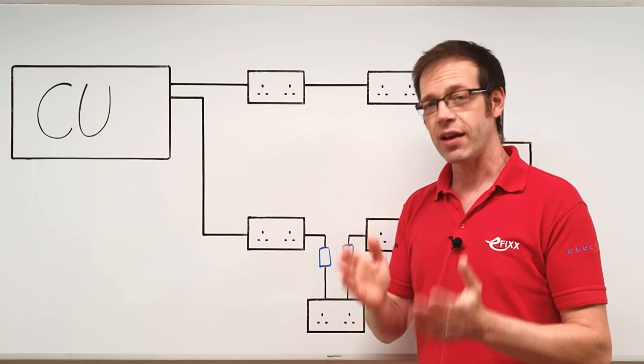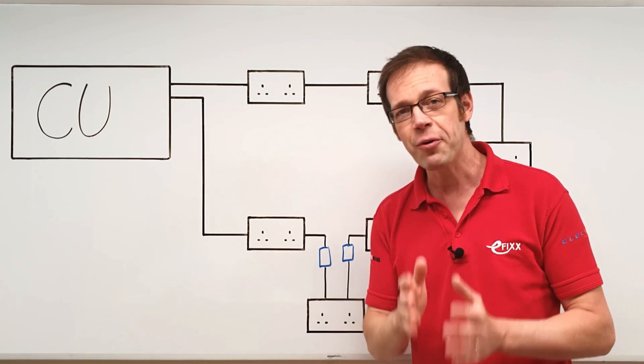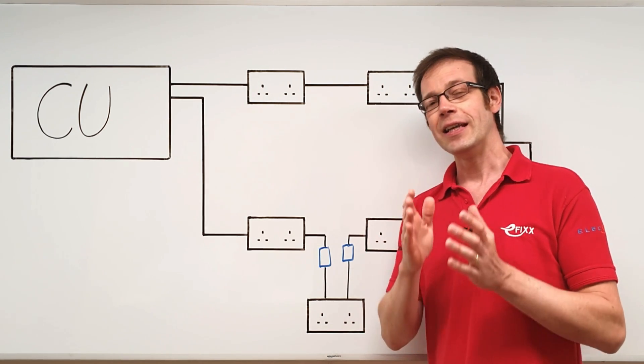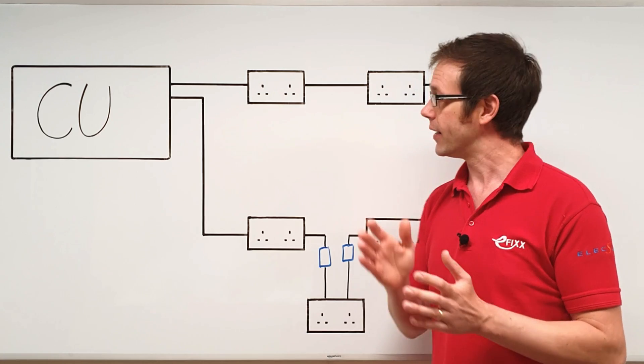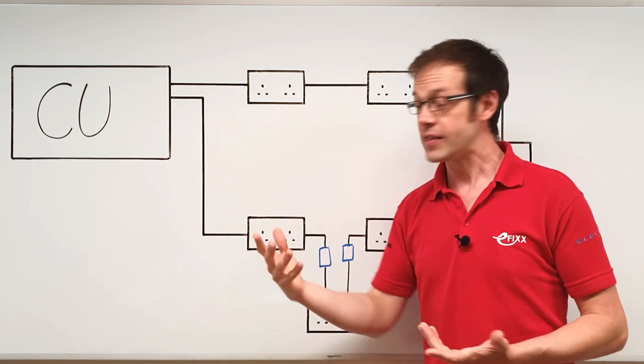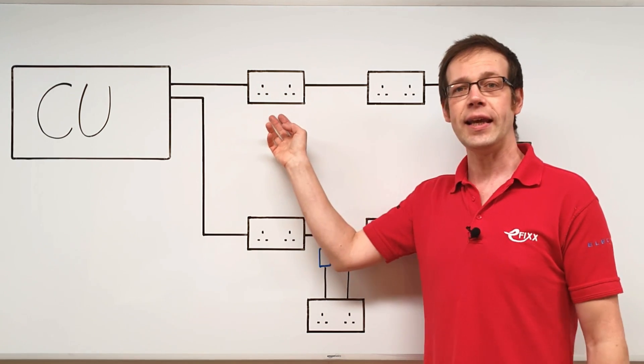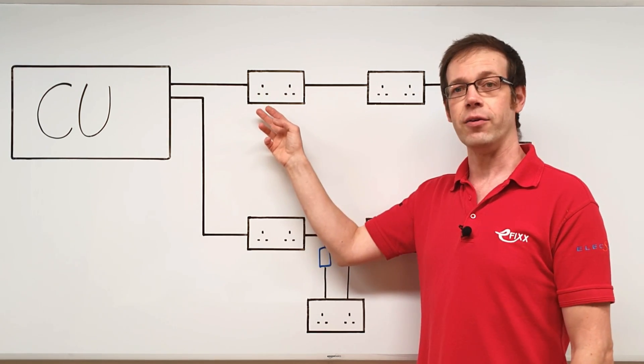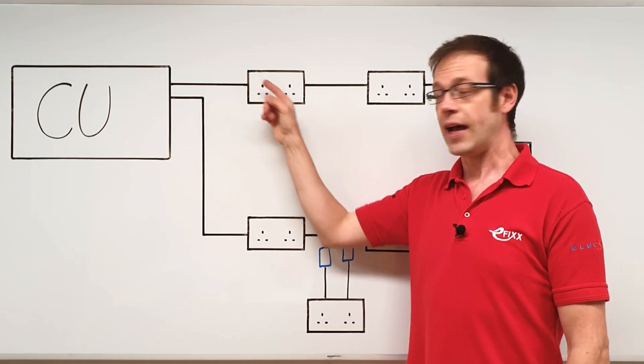Because no matter how carefully the circuit is designed, you cannot guarantee that exactly half the current will flow down this leg and half the current will flow down this leg. For example, if we were to plug a load in here, most of the current from that load would flow in this leg and much less would flow in this leg here.